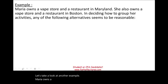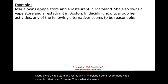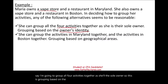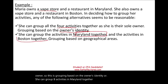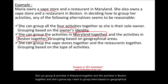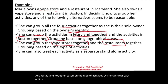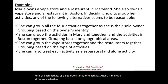Maria owns a vape store and a restaurant in Maryland, and also a vape store and a restaurant in Boston. In deciding how to group her activities, any of the following alternatives could be reasonable: group all four activities together based on owner identity; group the Maryland activities together and the Boston activities together based on geographic area; group the vape stores together and the restaurants together based on type of activity; or treat each as a separate standalone activity. It makes a difference whether each is treated as passive or active when it comes to netting, so be careful how you group them.